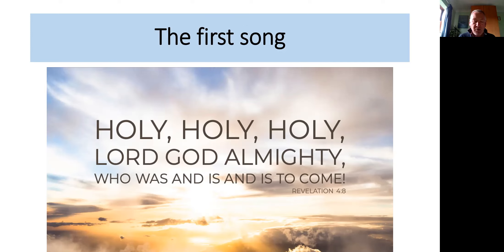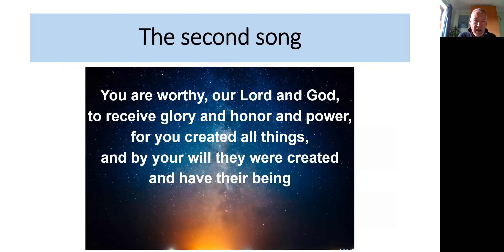And so they proclaim God's superlative holiness, his omnipotence over all creation, and his eternal nature, no beginning nor end. And so the 24 elders respond. On hearing this acclimation, the 24 elders fall down before him who sits on the throne, and they lay their crowns before him in worship. And we hear the second song of Revelation. You are worthy, our Lord and God, to receive glory and honor and power, for you created all things, and by your will they were created and have their being.